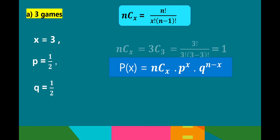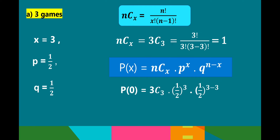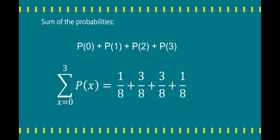For 3 games: x = 3. The combination of 3 at 3 is 3 factorial over 3 factorial times (3 minus 3) factorial, which equals 1. Substituting: 1 times (1/2) raised to 3, times (1/2) raised to (3 minus 3). So (1/2) cubed is 1/8, and (1/2) raised to 0 equals 1. Therefore, the probability for 3 games is 1 over 8. The sum of all probabilities: 1/8 + 3/8 + 3/8 + 1/8 = 8/8 = 1.